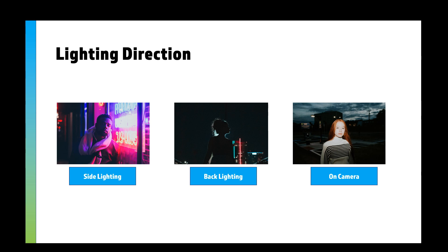Some examples: the backlight shows the outline of a lady, a silhouette — quite mysterious. Side lighting shows half of a man's face missing because the light is coming from the neon signs to his left. On-camera lighting shows all of a lady's features — you can see pretty much all of her face, making her look important as the subject, not the buildings in the background.